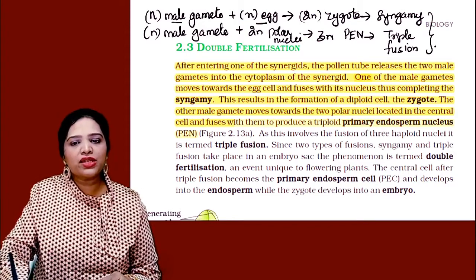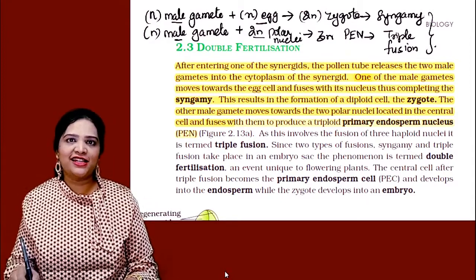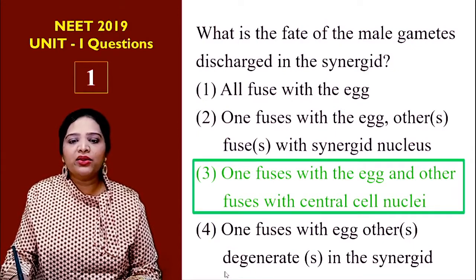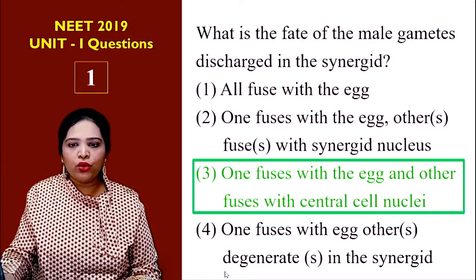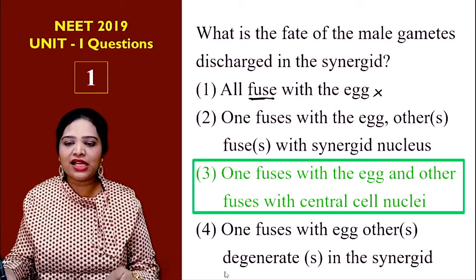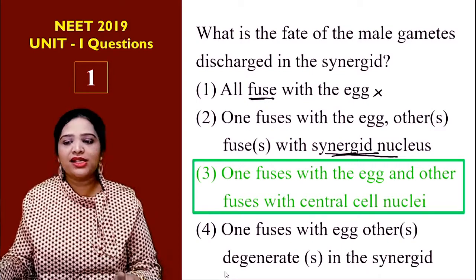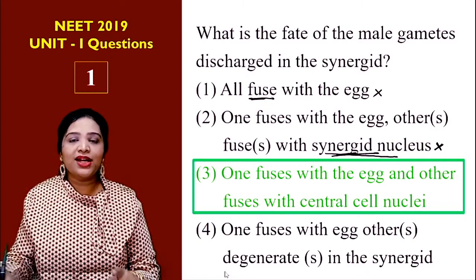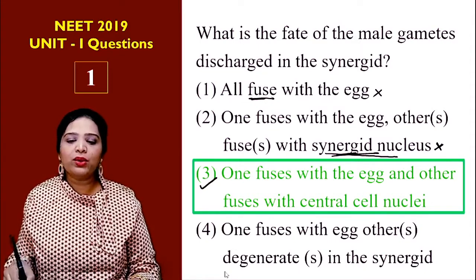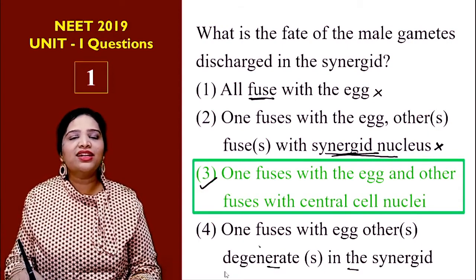So if you see here, one male gamete fuses with the egg and another fuses with the two polar nuclei in the central cell. Going back to the question: 'all fuse with the egg' — no, that is wrong. 'Other fuses with the synergid nucleus' — no, the gametes do not fuse with the synergid nucleus. 'One fuses with the egg and another fuses with the central cell nucleus' — yes. 'Others degenerate' — they do not degenerate. So the third option is the correct answer.